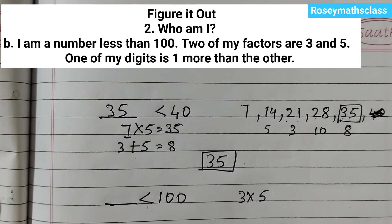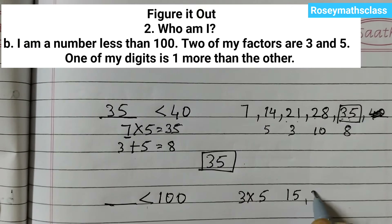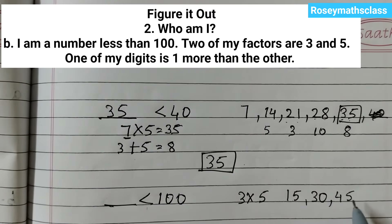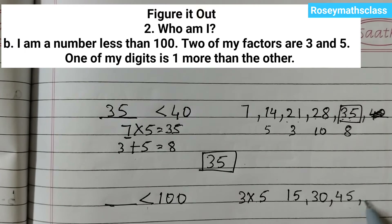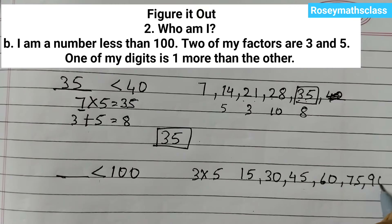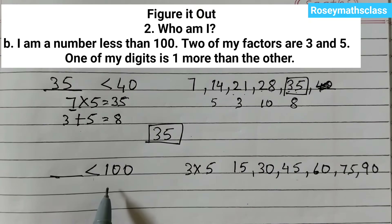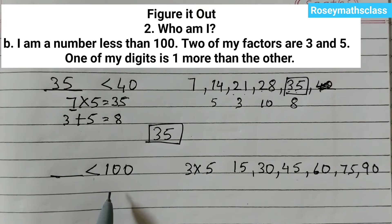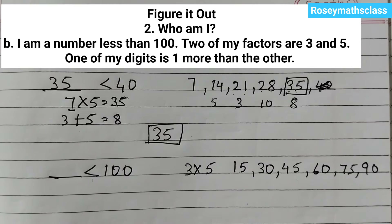The multiples of 15 are: 15×1=15, 15×2=30, 15×3=45, 15×4=60, 15×5=75, 15×6=90. We stop here because the number is less than 100. The next condition: one of my digits is one more than the other.